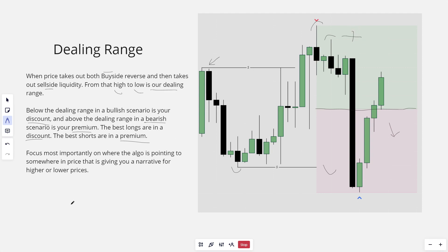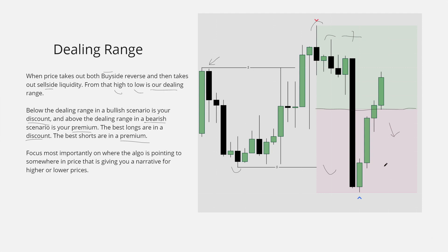Focus most importantly on where the algo is pointing — somewhere in price action that is giving you a narrative for higher or lower prices. A lot of mentors have probably told you every single time you get a high or low, anchor your dealing range and then sell above the 50%, or if you get a low to a high, sell below the 50%, without focusing on narrative. This is what I want to get into to make sure you guys are doing this the right way.